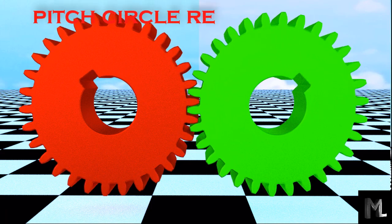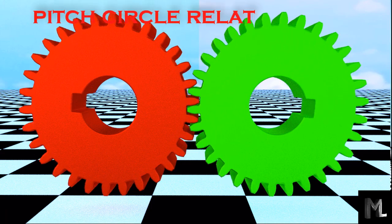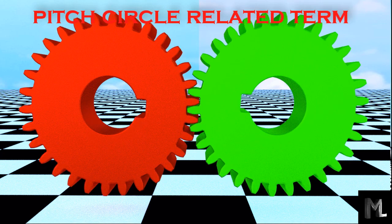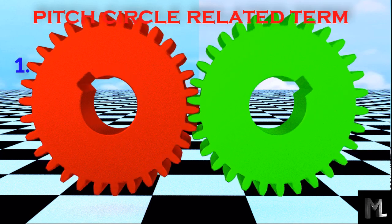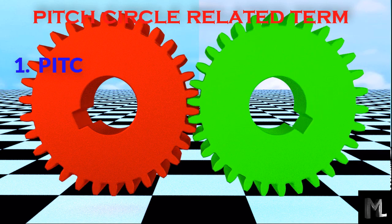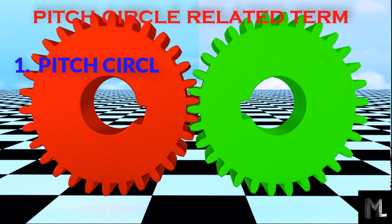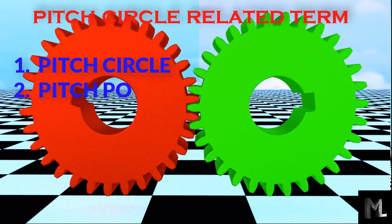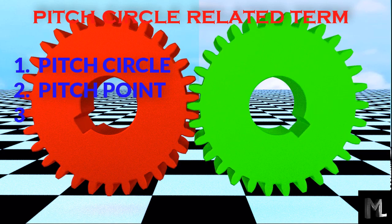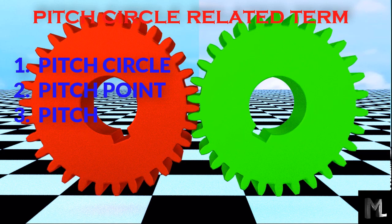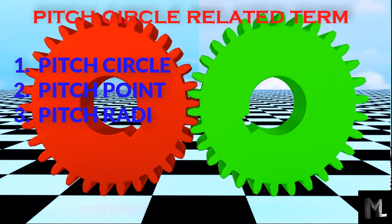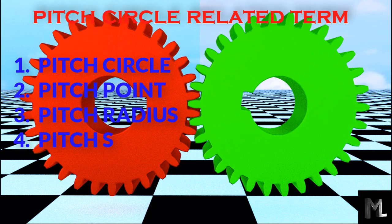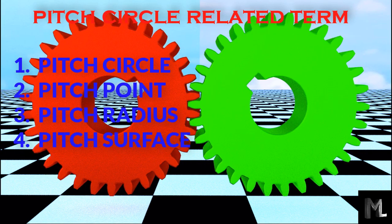The pitch circle related terms are: number one is pitch circle, number two is pitch point, number three is pitch radius, and number four is pitch surface.